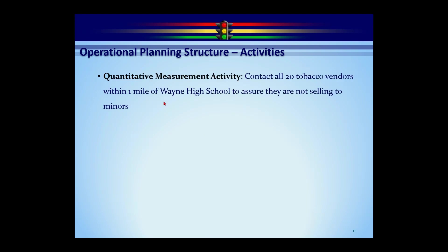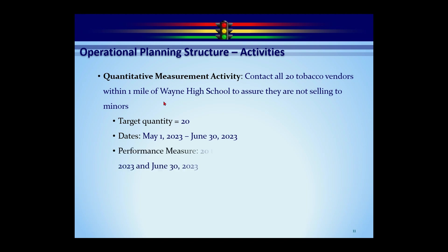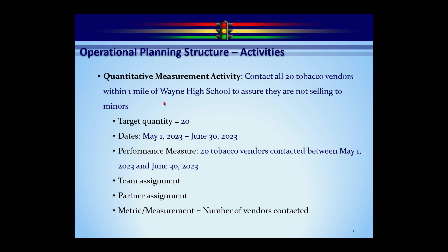The quantitative measurement (QM) activity is nearly identical to the project-based activity, except you have a specific quantity you're measuring. Example: Contact all 20 tobacco vendors within a mile of the high school to ensure they're not selling to minors. The target quantity (20) acts as the denominator — if you've done 10 of 20, that calculates to 50% complete. The performance measure is automatically created: '20 tobacco vendors contacted between May 1 and June 30.' The metric input is simply how many vendors were contacted.